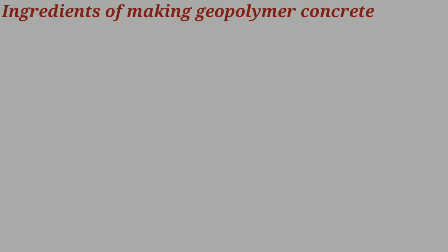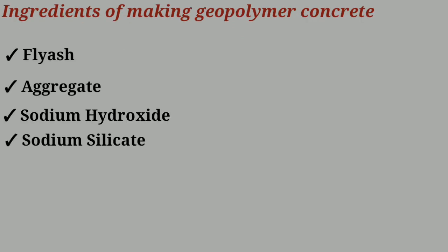The ingredients for making geopolymer concrete are: fly ash, aggregate, NaOH (sodium hydroxide), Na2SiO3 (sodium silicate), plus oven curing at 100 degrees Celsius for 3 to 4 days — typically 3 days.